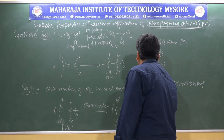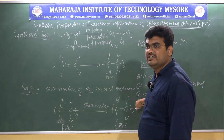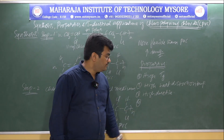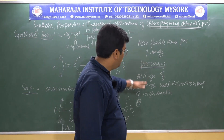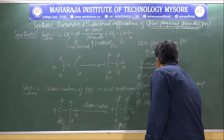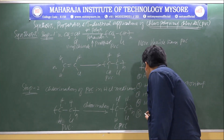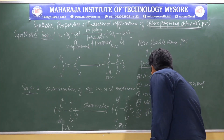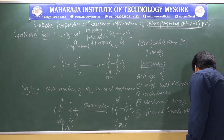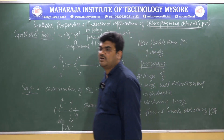CPVC is highly ductile, chemically stable, and resistant to chemicals, corrosion, water, acids, and alkalis. It is more flexible and strong, exhibiting outstanding mechanical properties, a high dielectric constant, and very high flame and smoke absorbing properties.